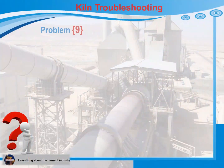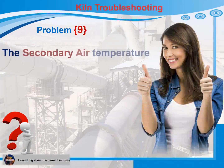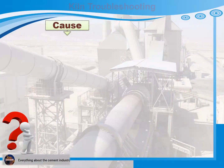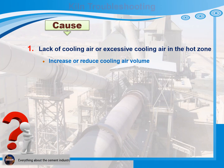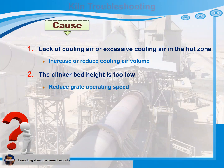Problem 9: The secondary air temperature is too low. Cause 1: Lack of cooling air or excessive cooling air in the hot zone. Recommendations for action: Increase or reduce cooling air volume. Cause 2: The clinker bed height is too low. Recommendations for action: Reduce grate operating speed.